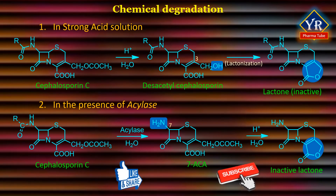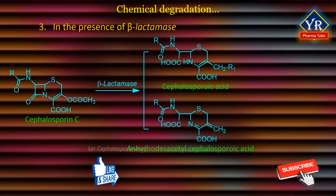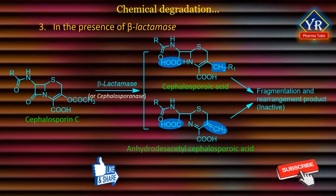The reactive functionality common to all cephalosporins is the beta-lactam ring. Degradation in the presence of beta-lactamase enzyme: The enzyme beta-lactamase or cephalosporonase degrades cephalosporin C into cephalosporoic acid, anhydrodesacetylcephalosporoic acid, and desacetylcephalosporoic acid. Further breakdown of these acidic products leads to many other fragmented and rearranged products.